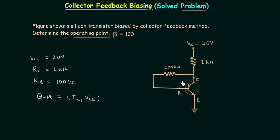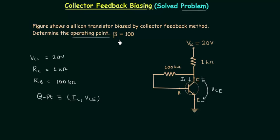The coordinates of the operating point are IC and VCE. IC is the collector current or the output current, and VCE is the potential difference between these two points. Collector is at the higher potential and emitter is at the lower potential, so VCE has this polarity. Beta is equal to 100, the amplification factor.